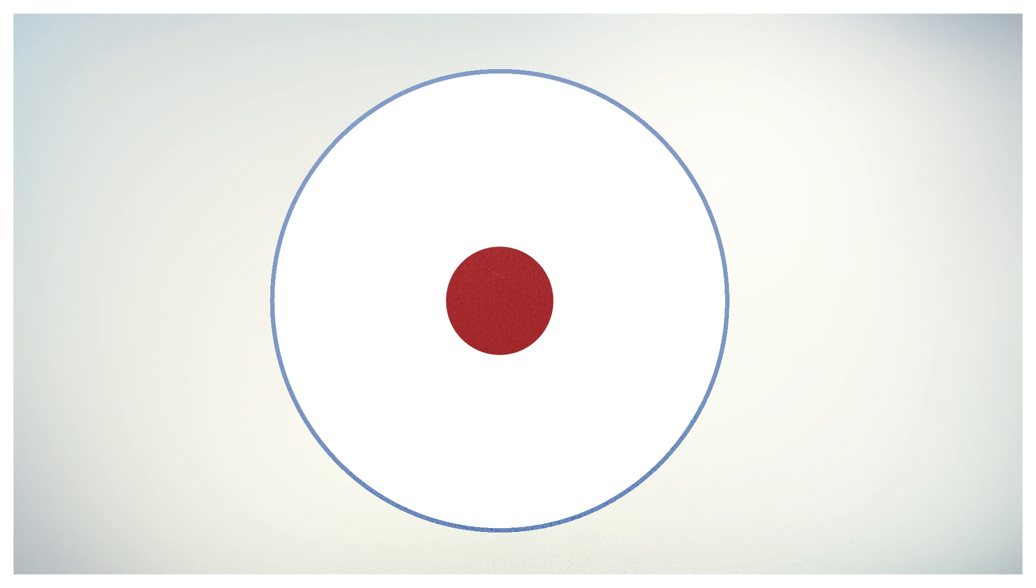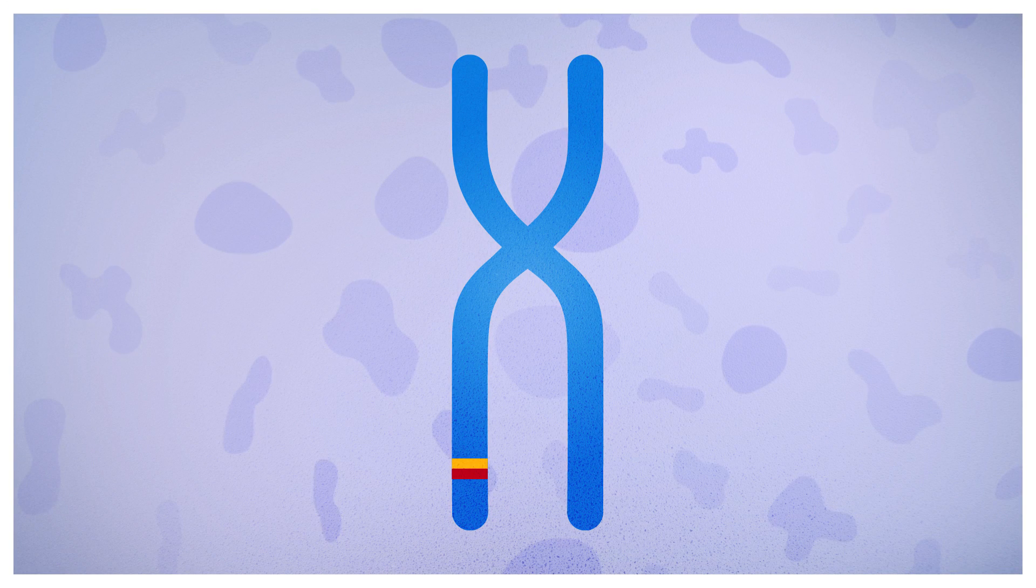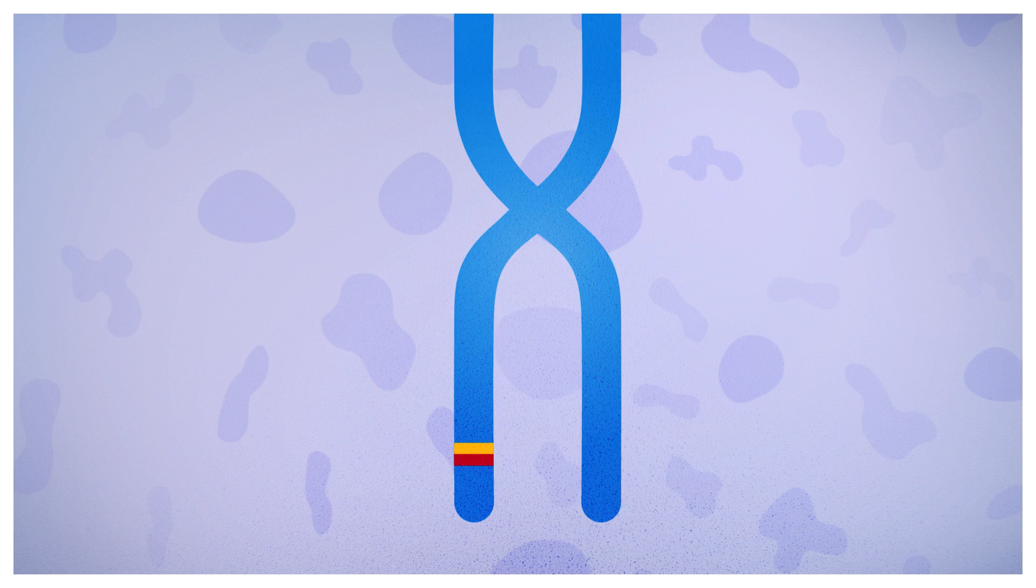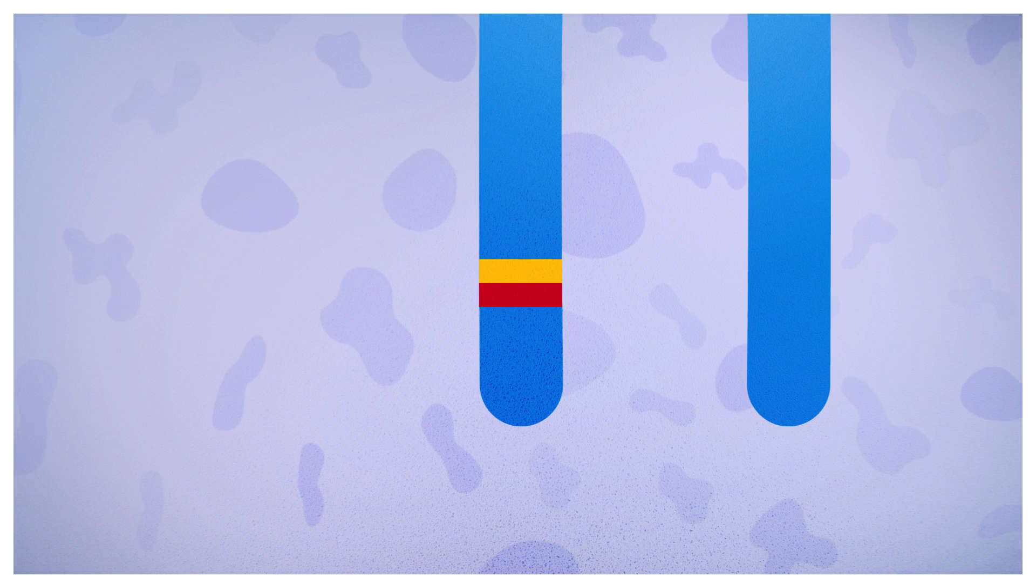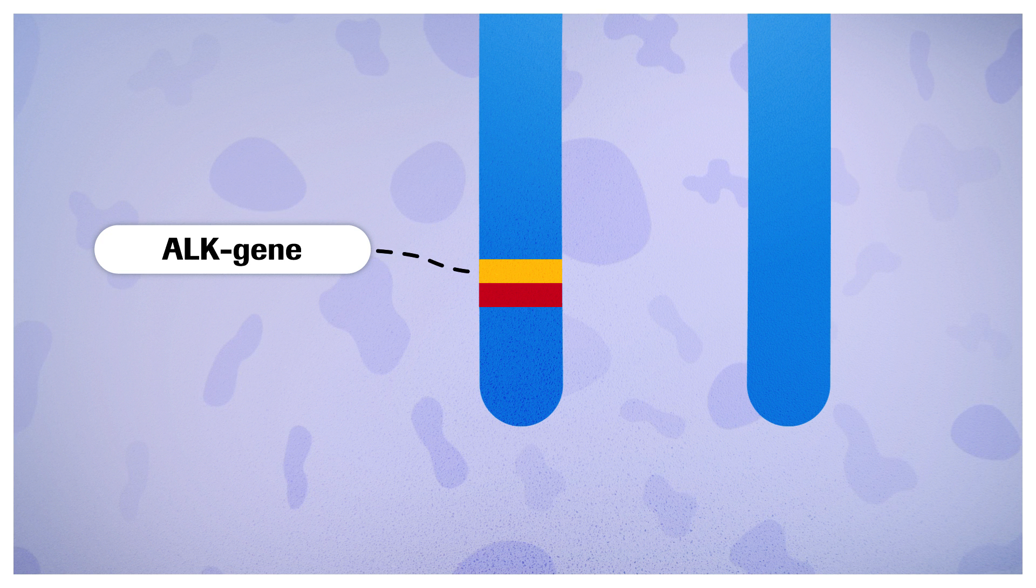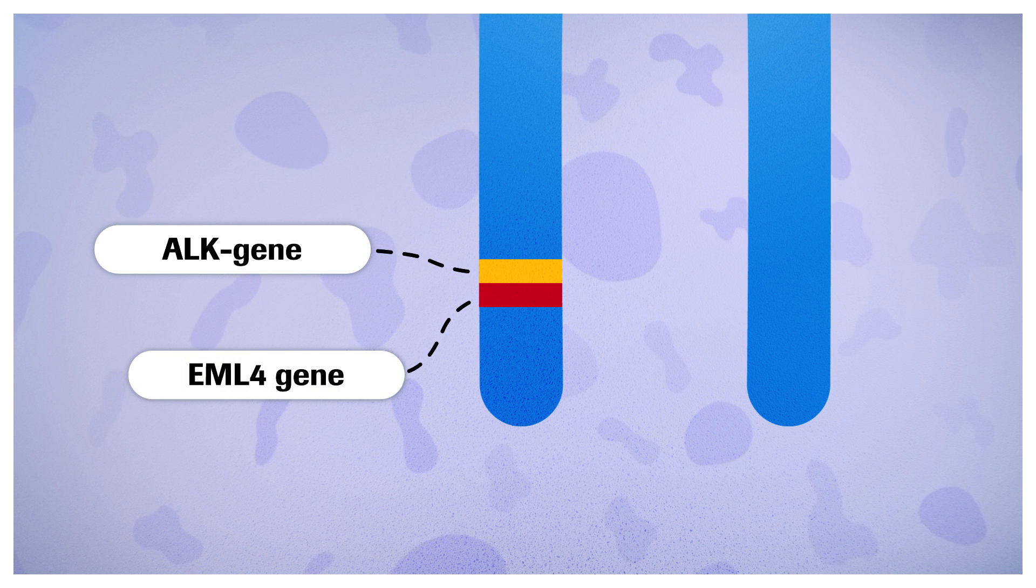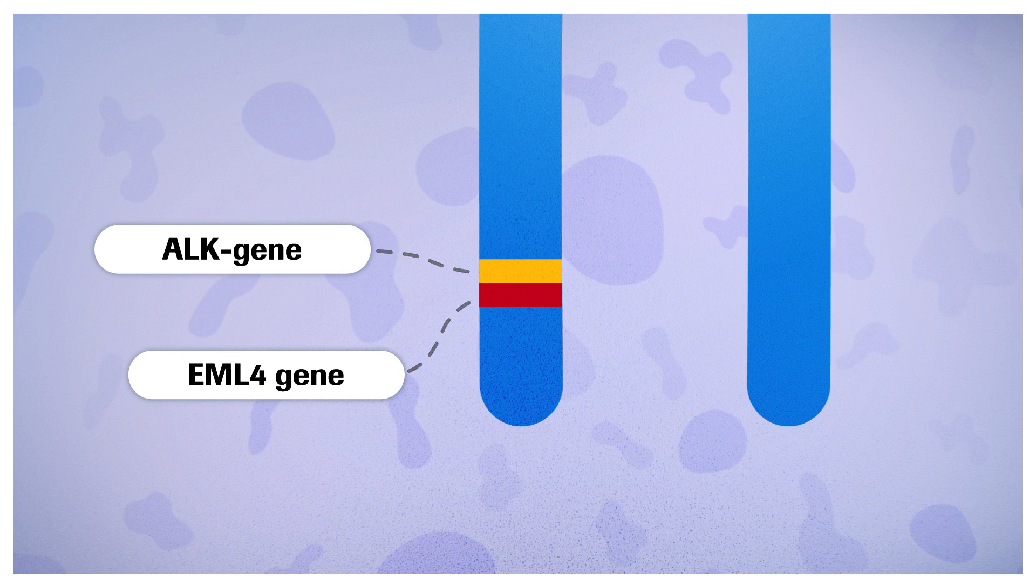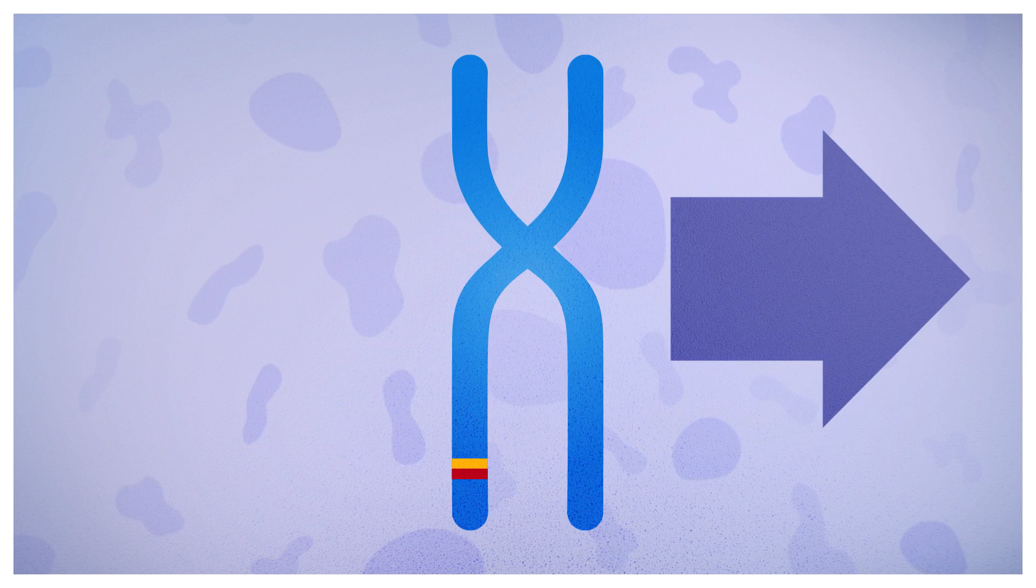ALK-positive non-small cell lung cancer is caused by a change in the DNA of the cells. This change is caused when the ALK gene and another gene combine or fuse. The most common fusion partner in ALK-positive non-small cell lung cancer is EML4. The combined ALK gene creates ALK fusion proteins.